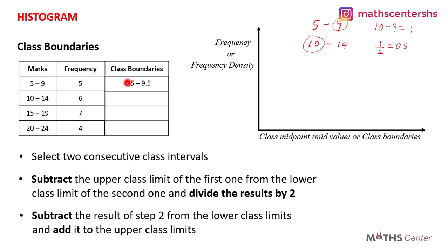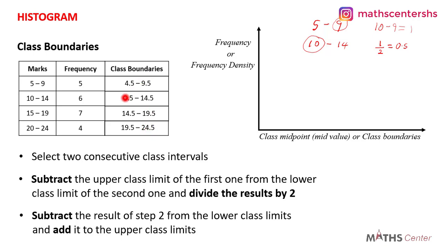For the second interval, 10 minus 0.5 = 9.5 and 14 plus 0.5 = 14.5. For the third, 15 minus 0.5 = 14.5 and 19 plus 0.5 = 19.5. For the fourth, 20 minus 0.5 = 19.5 and 24 plus 0.5 = 24.5. This is how you find the class boundaries.